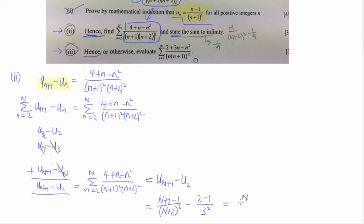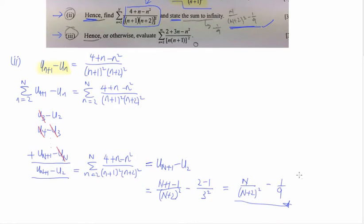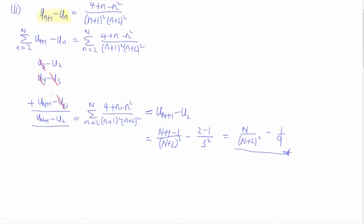That collectively gives us N/(N+2) − 1/9, which is the answer. I estimate this is worth 2 out of 3 marks, and the final one mark is for stating the sum to infinity. Now that we know the sum to N is this expression, the question wants us to sum to infinity — so instead of adding to N, we add all the way to infinity, which means taking the limit as n tends to infinity.